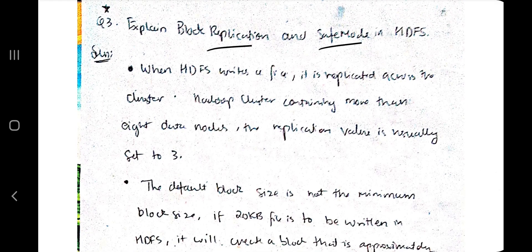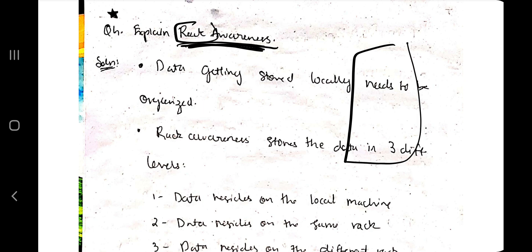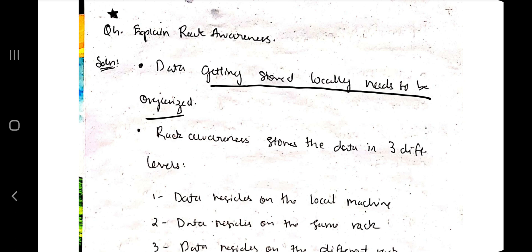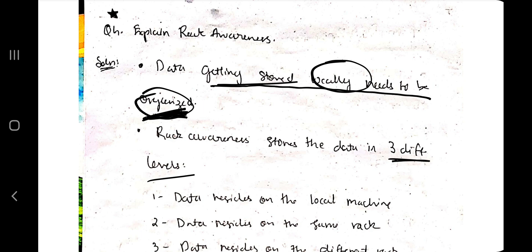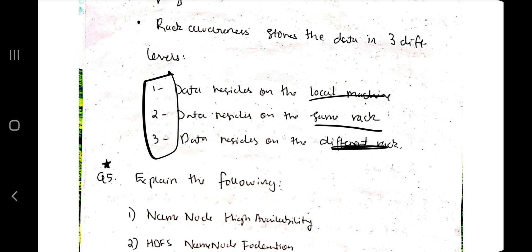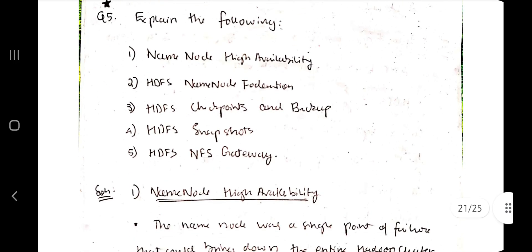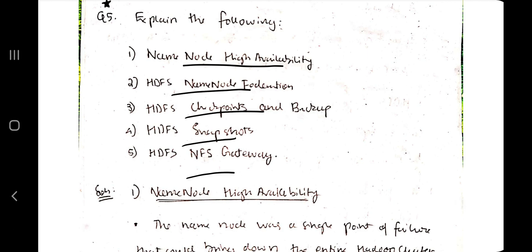Moving on to the fourth question: explain rack awareness. A rack is a store of data nodes — many data nodes are stored in a rack. Data stored locally needs to be organized; if it is not organized, it will be very hard to retrieve. There are three levels: data resides on the local machine, in the same rack, or on a different rack. Being aware of these levels and writing code to handle this automatically is called rack awareness.